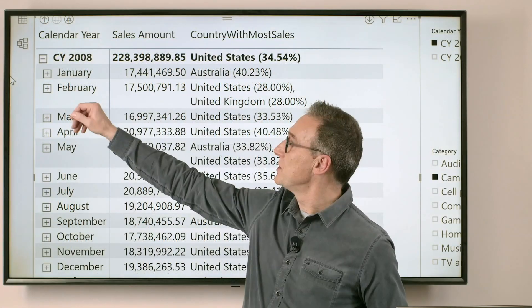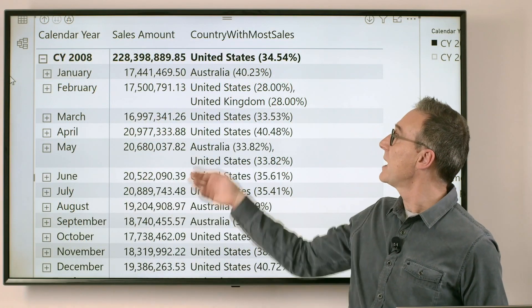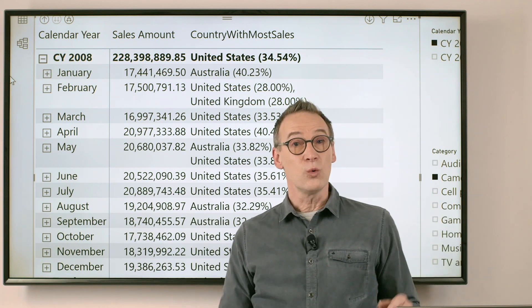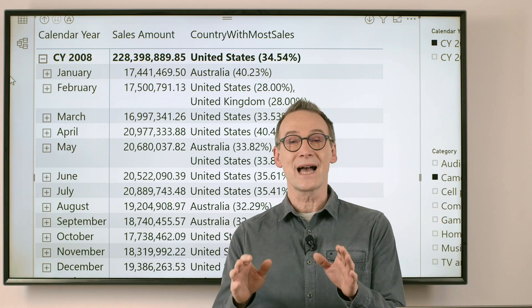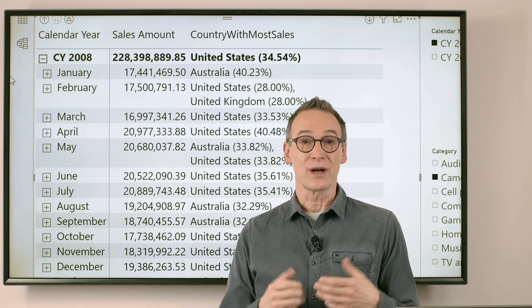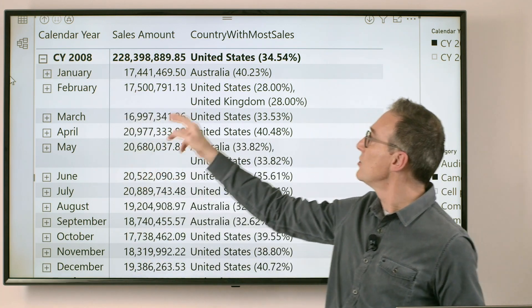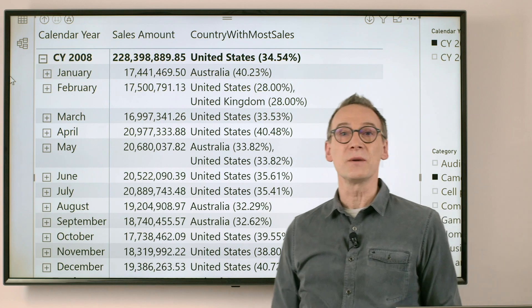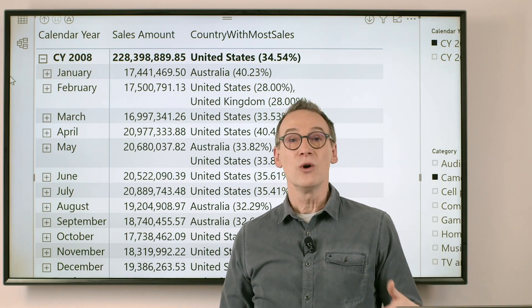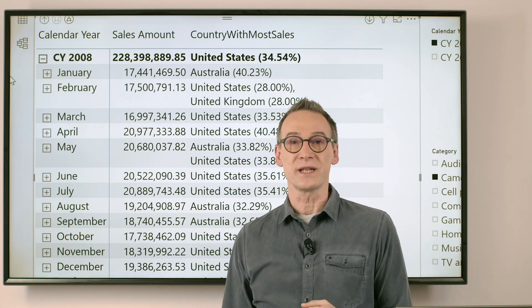In this report, I'm showing the year, the month, the sales amount, and the country with most sales, which is showing the best country that month. So country with most sales is telling me that in January 2008, Australia, with 40.23% of share, was the best country for sales.